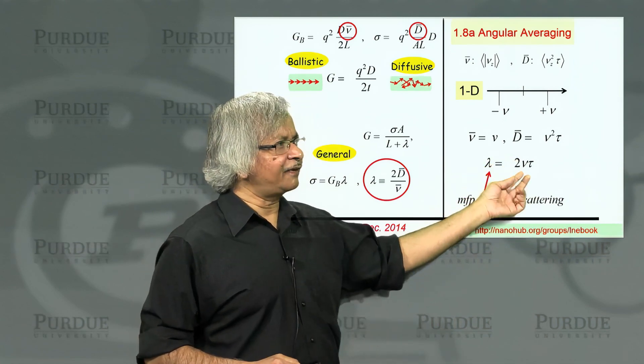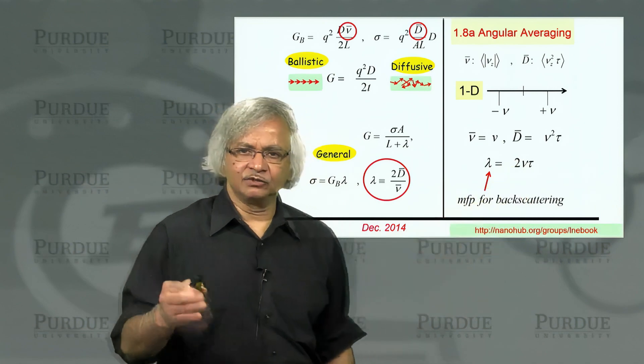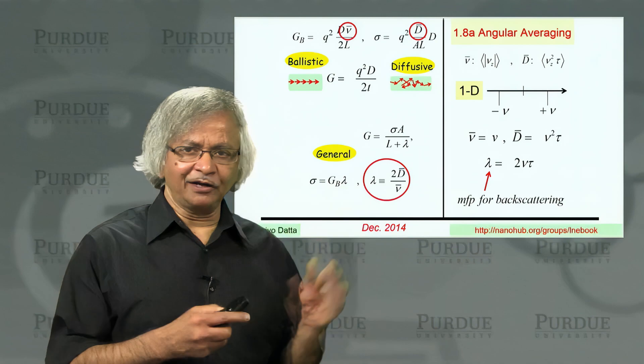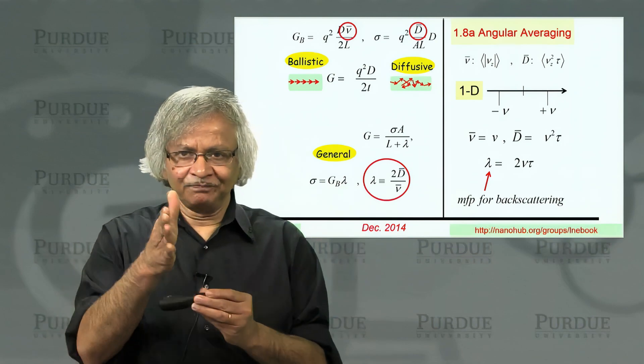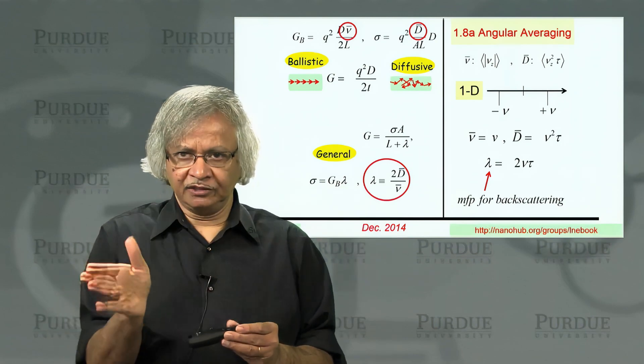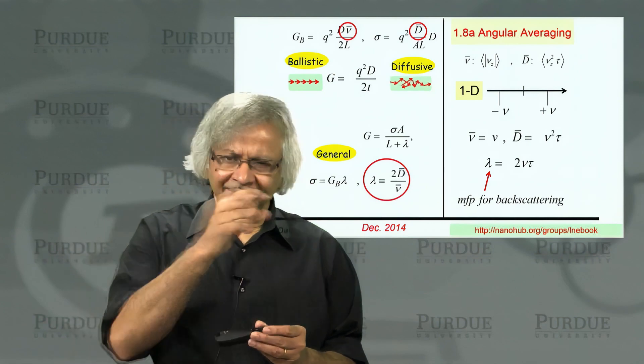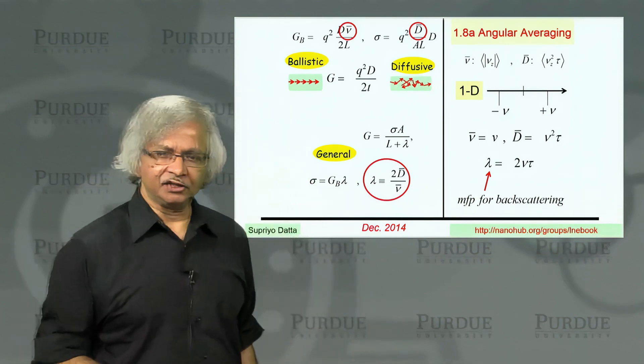Now, the exact factor that appears here, as you'll see, will be different in different dimensions. Right now we are talking about a 1D transport. Next, we'll talk about 2D, where you can go around in a circle. And then we'll talk about 3D. And that exact numerical factor will change a little bit.